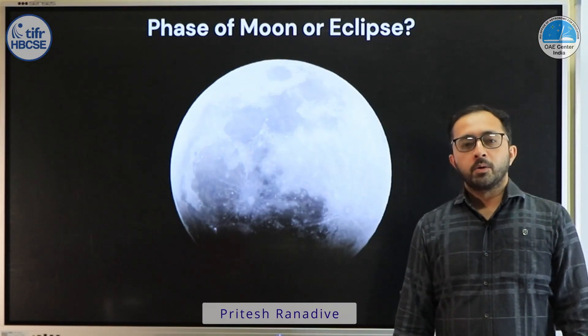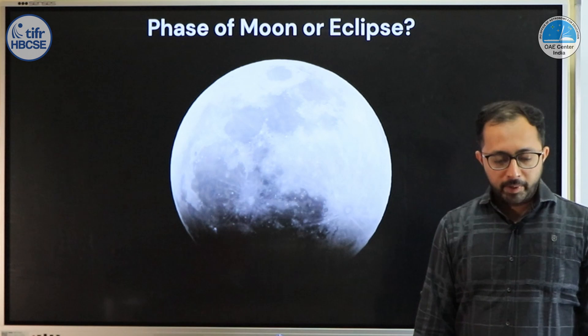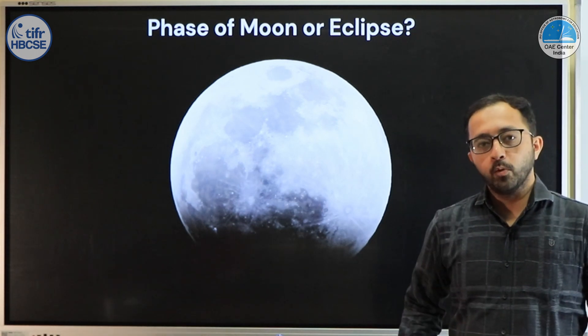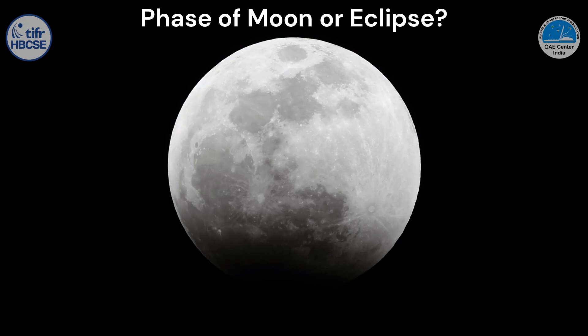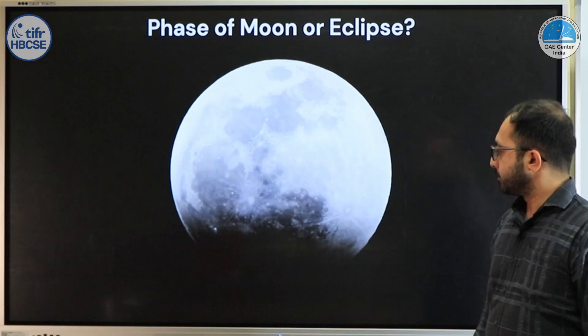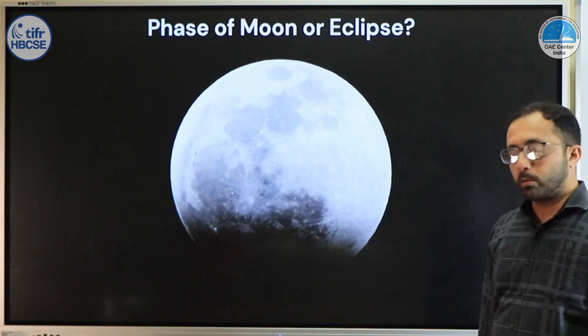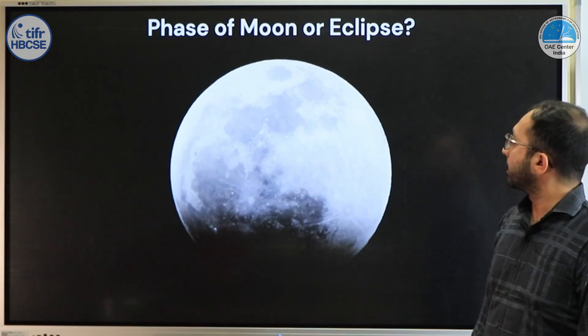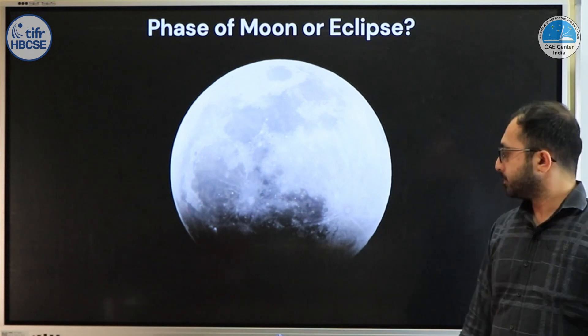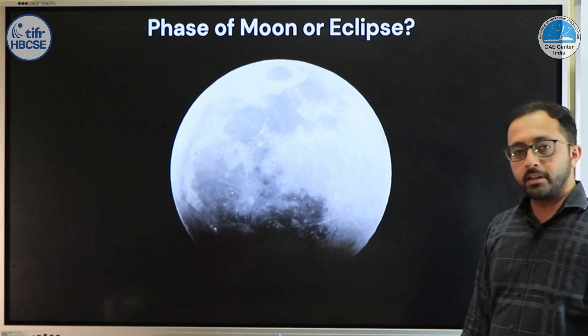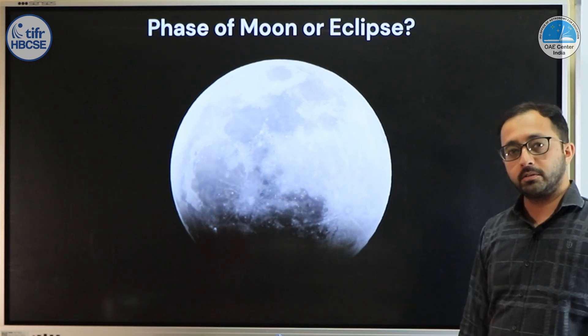Hello everyone. Today we will be talking about the phases of the moon. On the screen you see the image of the moon, and some part of it is black or dark. Do you think it is the phase of the moon, or something else — is it an eclipse? In this video we will have the answer to this question.